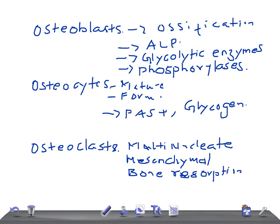These cells have enzymes including glycolytic acid hydroxylase, collagenase, and acid phosphatase. These are the important functions of the bone cells and what they contain.